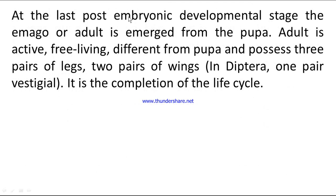At the last postembryonic developmental stage, the imago or adult emerges from the pupae. The adult is active, free-living, and different from the pupae. It possesses three pairs of legs and two pairs of wings — in Diptera, one pair is vestigial. It is the completion of the life cycle.